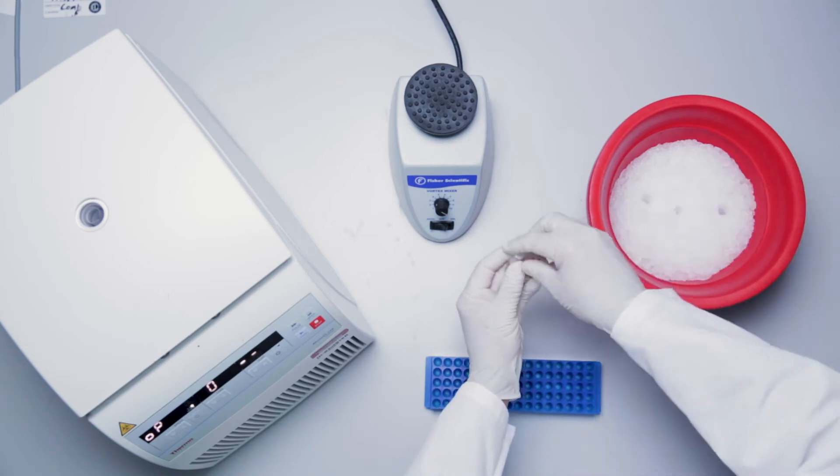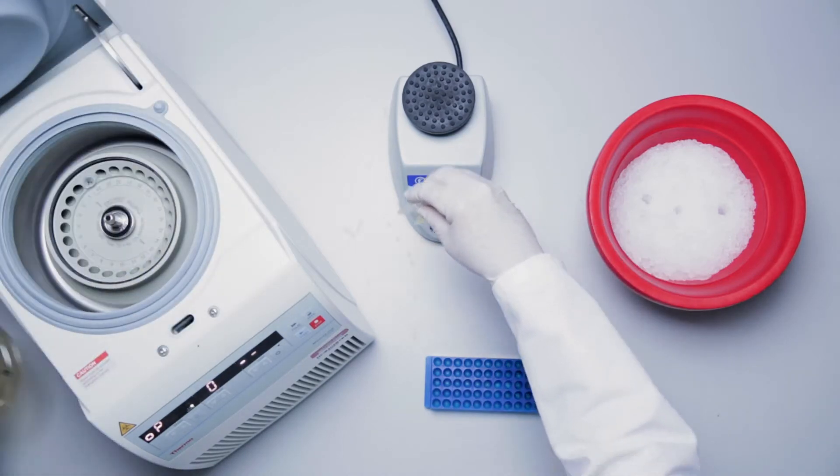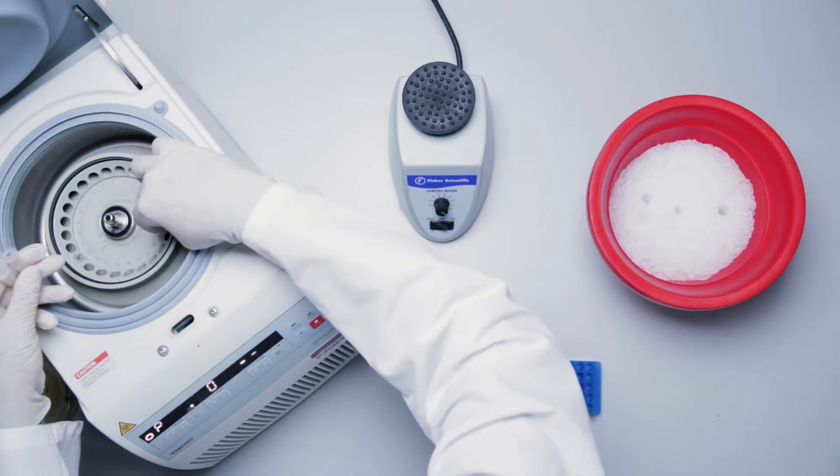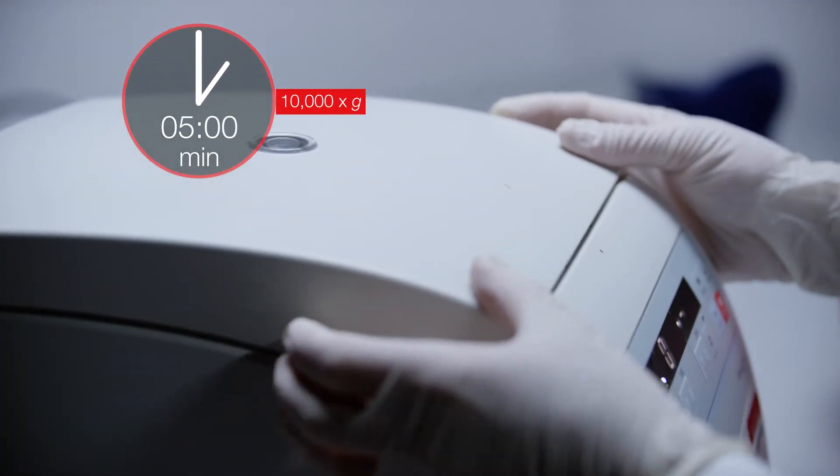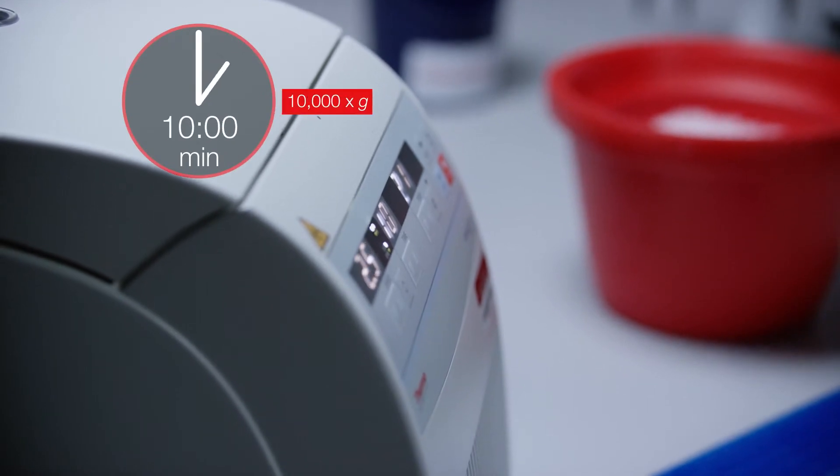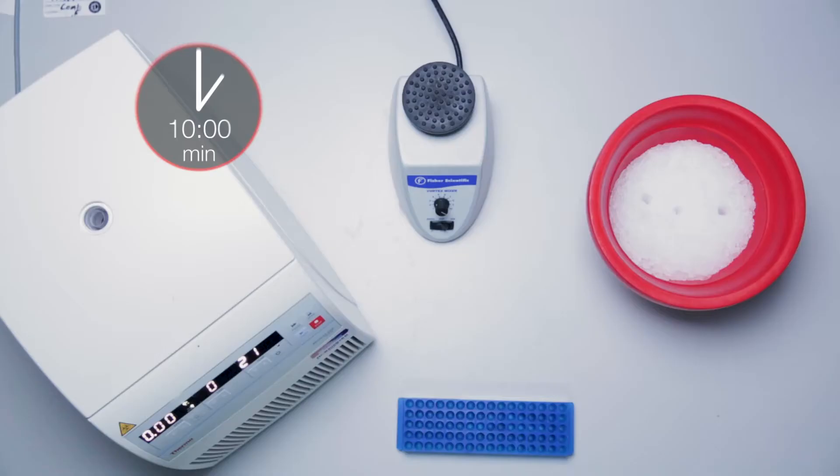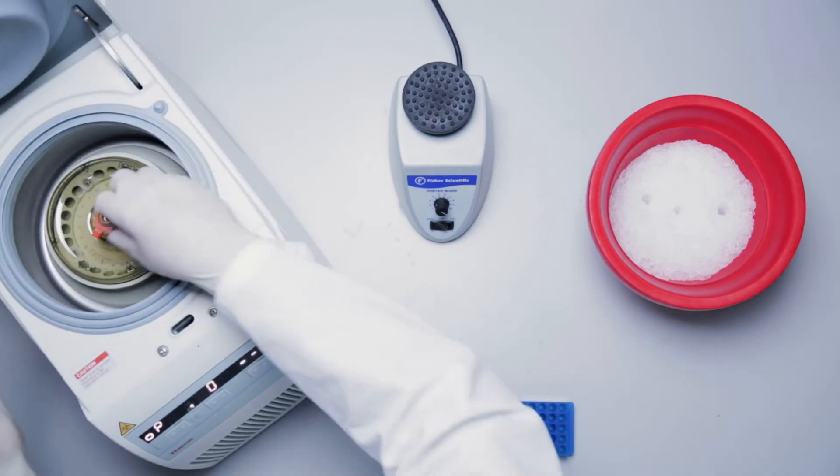Mix well by vortexing. Centrifuge at 10,000 g for 5 minutes to remove particulates, or for 10 minutes if samples are high in lipid content. Transfer the contents to a new tube. Avoid multiple freeze-thaw cycles.